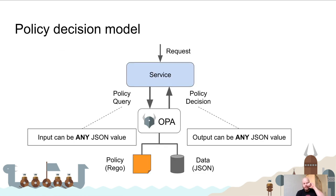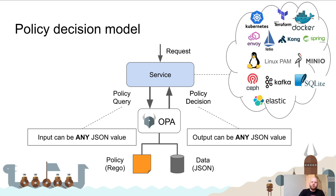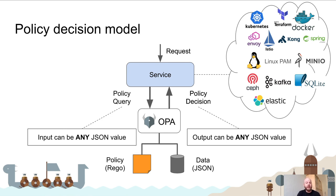How can OPA service requests for all these diverse technologies? The answer is the policy decision model. Any service — an application, an Envoy proxy, the Kubernetes API server, or Kafka — reaches out to OPA when it receives a request and asks for a decision. It also provides some data as part of that request, just JSON — maybe the name of the user, some roles, and the endpoint the user is trying to access.